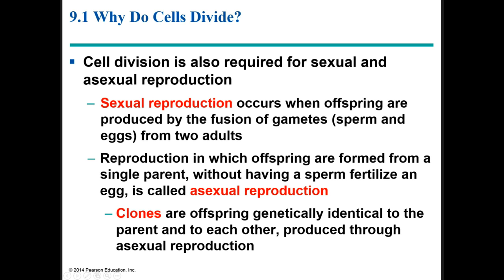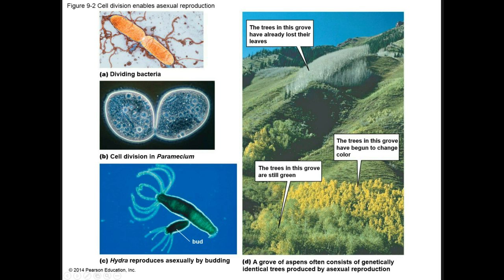Cell division is also required for sexual and asexual reproduction. Sexual reproduction occurs when offspring are produced by the fusion of gametes, such as sperm and eggs, from two adults. Reproduction in which offspring are formed from a single parent without having a sperm fertilize an egg is called asexual reproduction. Clones are offspring genetically identical to the parent and to each other, produced through asexual reproduction. Certain organisms use cell division for asexual reproduction, including bacteria, paramecium, hydra, and certain types of trees.